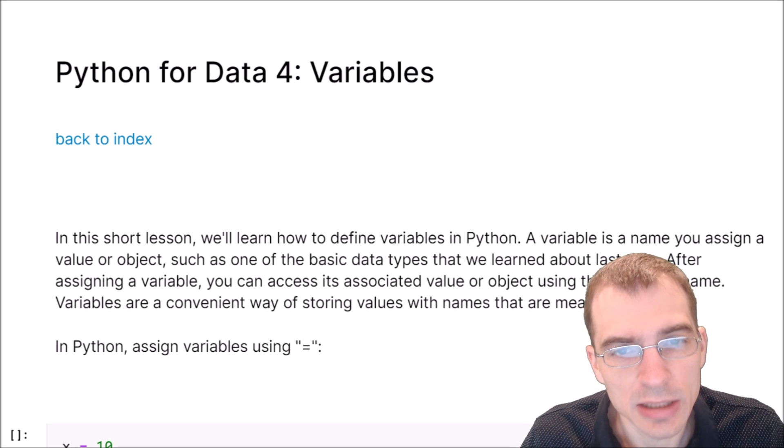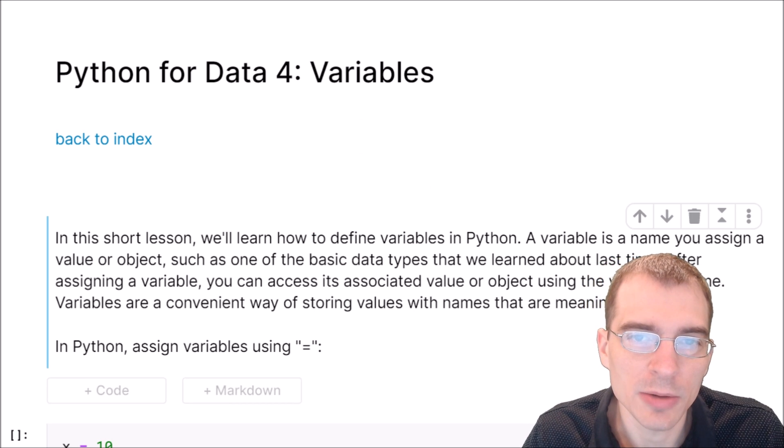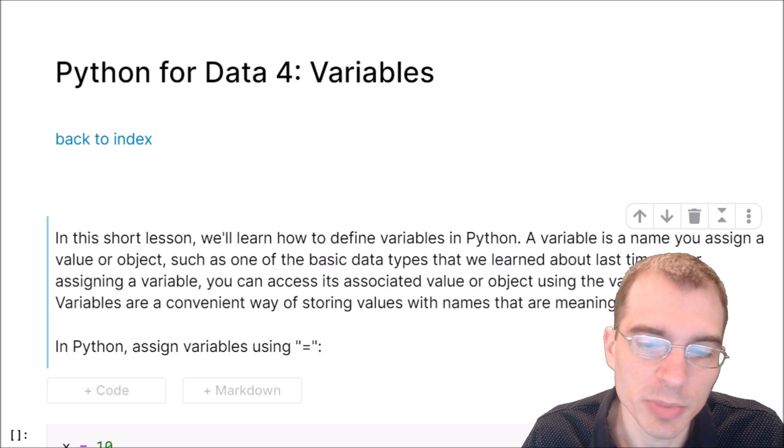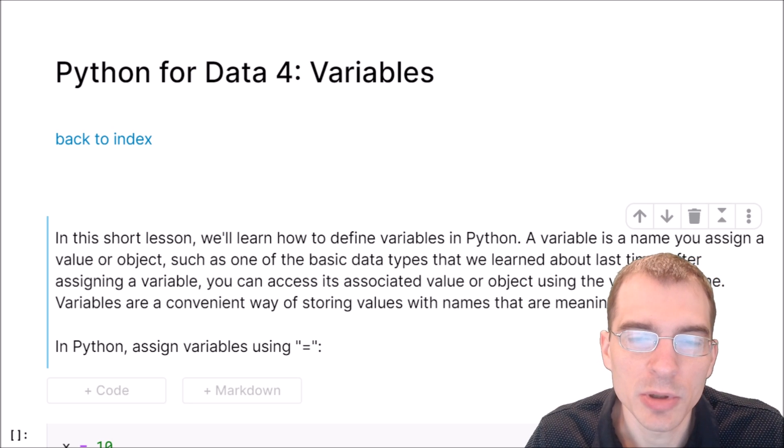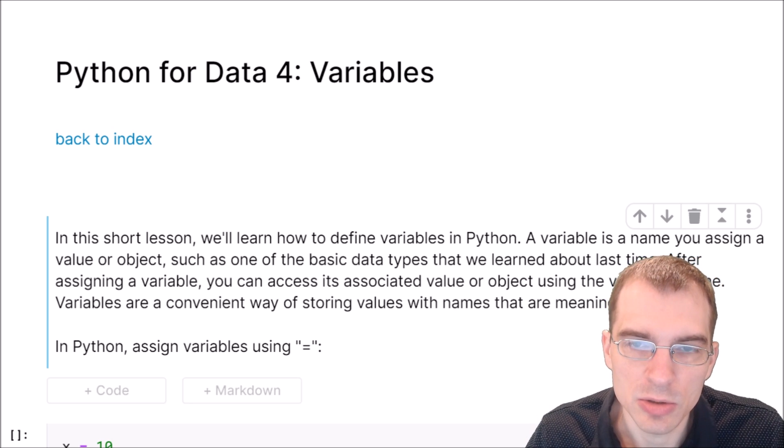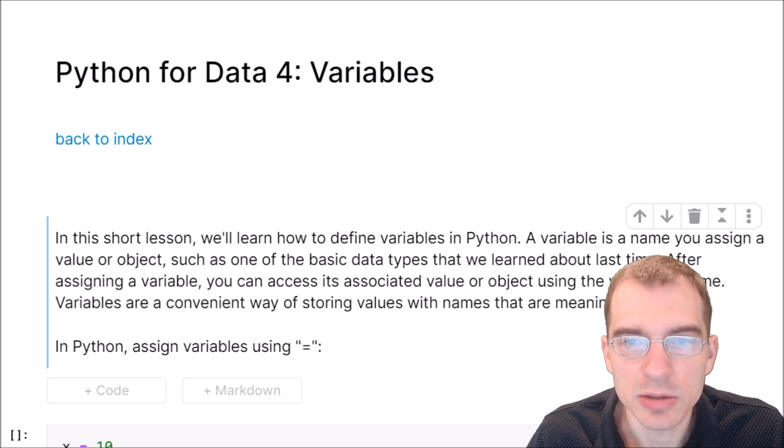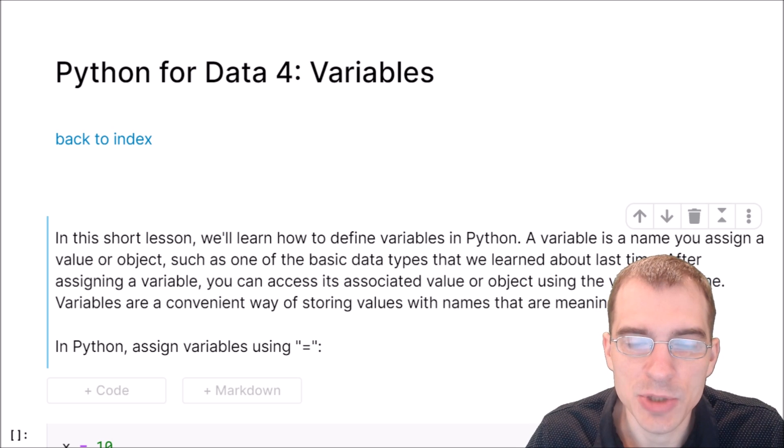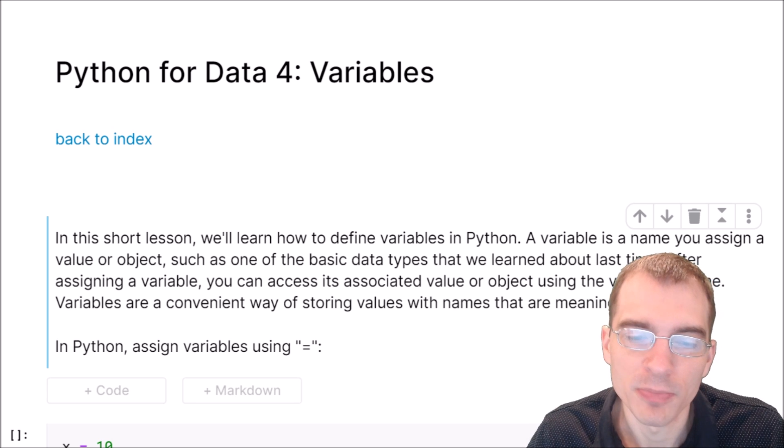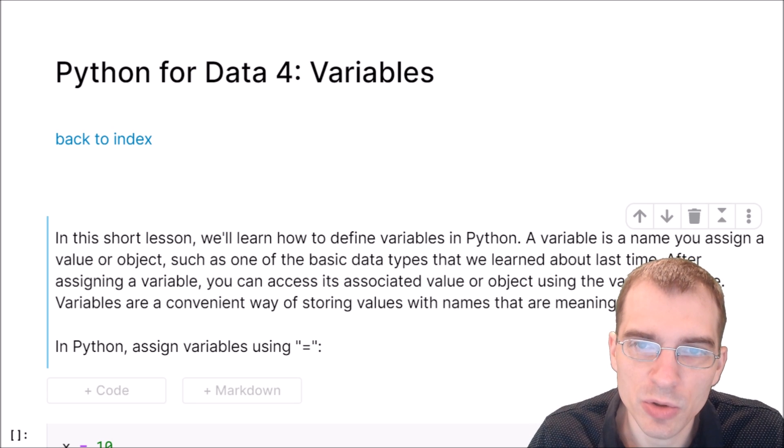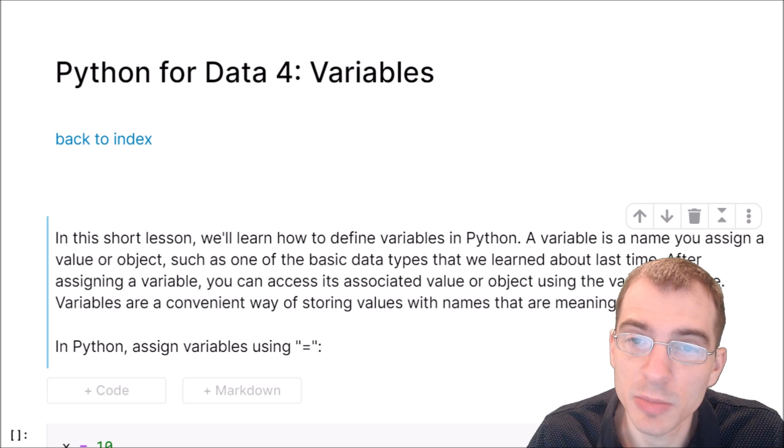Hello everyone. In this lesson we're going to learn about how to assign variables in Python. A variable is just a name that you associate with a certain value or object, and then you can work with that value or object by using that name. Variables are a convenient way of storing values with names that are meaningful.